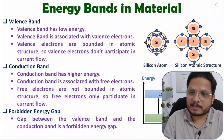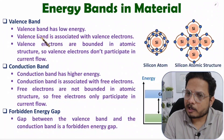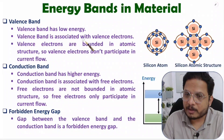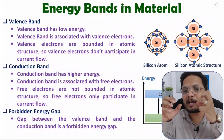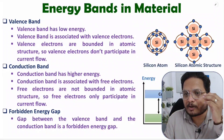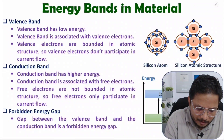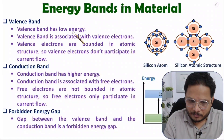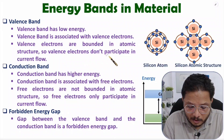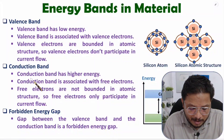Valence band energy will always be low, because valence band is associated with valence electrons which are bounded in the atomic structure — those electrons have lower energy. Conduction band is having higher energy because it is associated with free electrons which are not bounded in the atomic structure, and free electrons only participate in the flow of current.